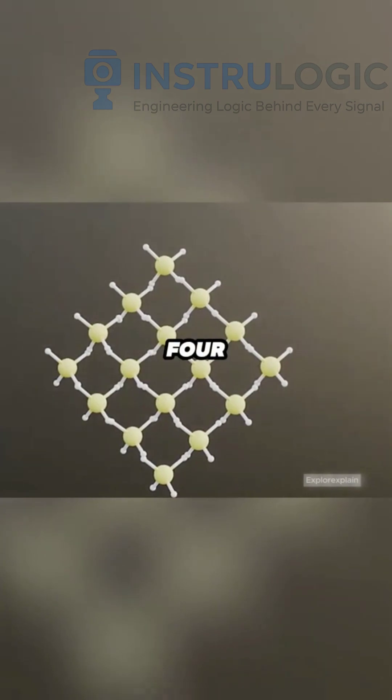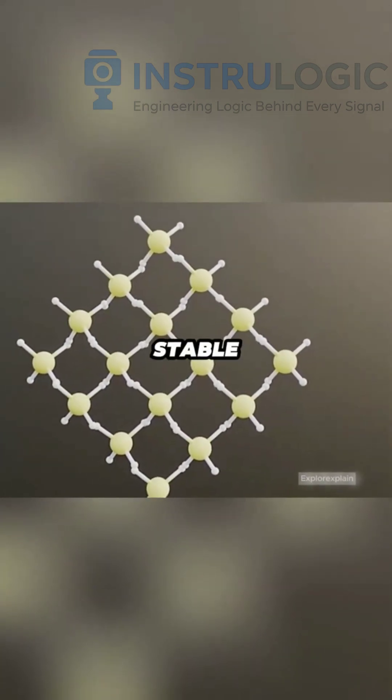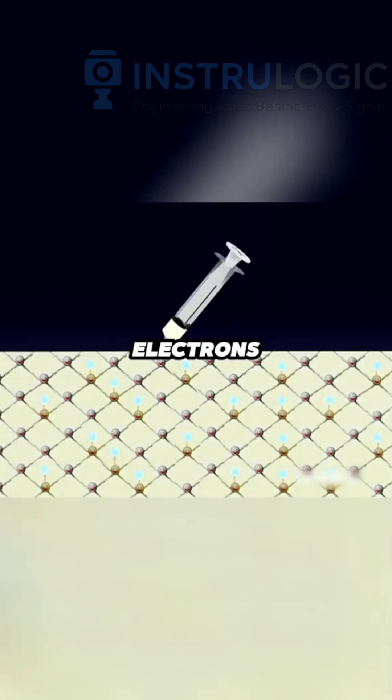A silicon atom has four outer electrons. It shares them to form a stable structure. Here, electrons can't move freely.